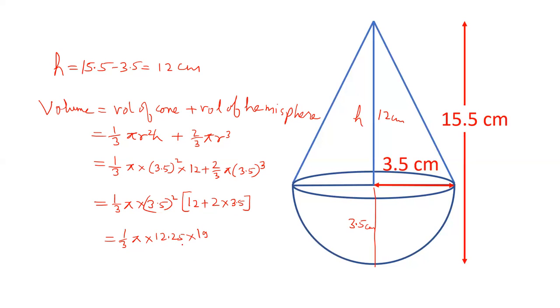12.25 को हम 49 by 4 लिख सकते हैं। तो one-third में 49 by 4 into 19 आएगा।